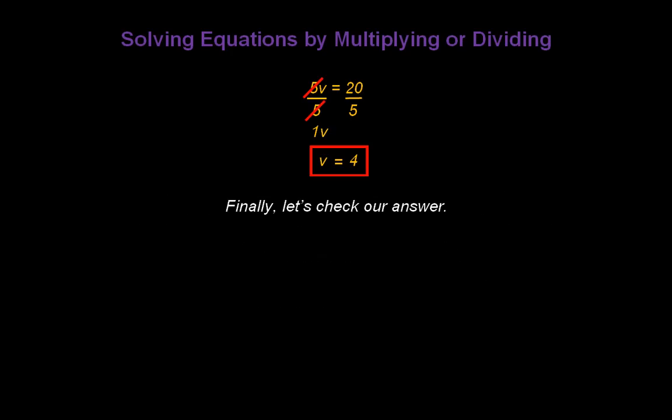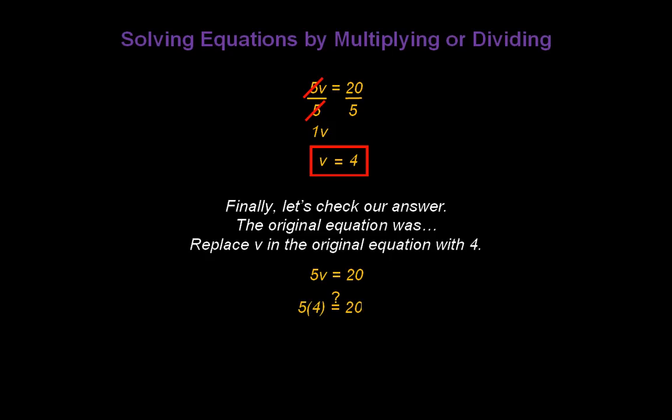Now let's check to see if we're right. Here's what we can do. The original equation was 5 times v equals 20. We think v is 4. So we're going to replace v with a 4. And I'm going to write down 5 times 4. Does that equal 20? And sure enough, when I multiply 5 and 4, I find out that 20 does equal 20. So we know that our solution is correct.